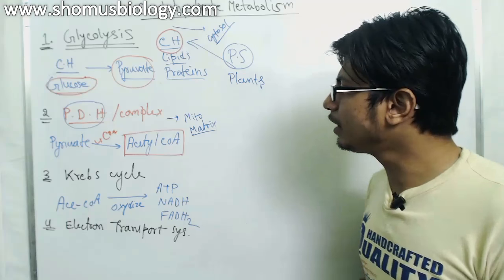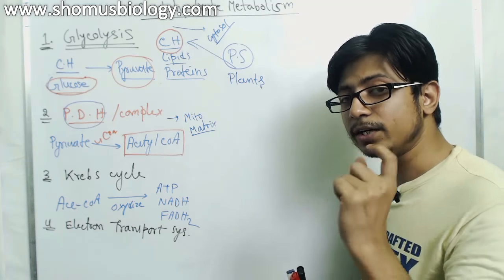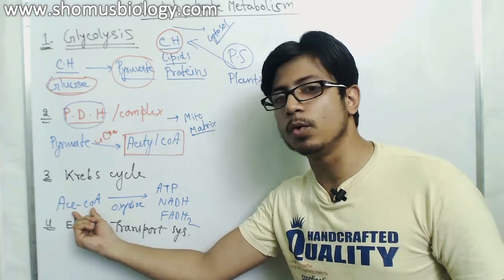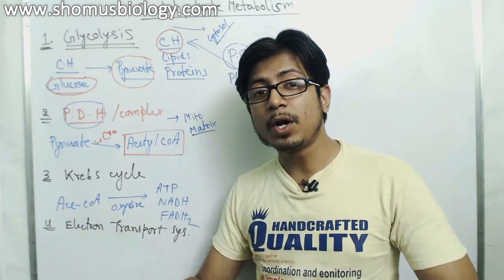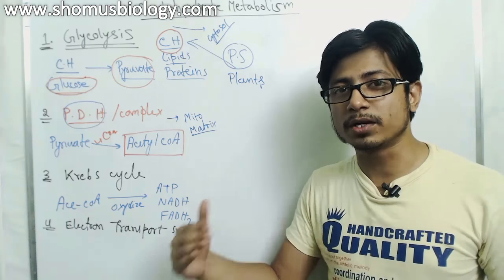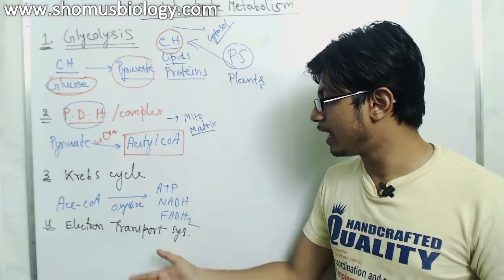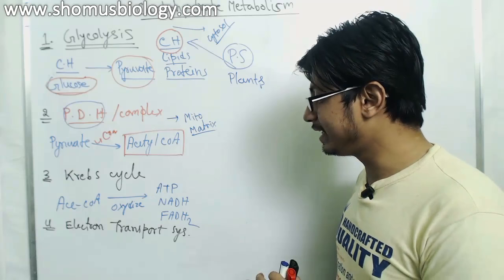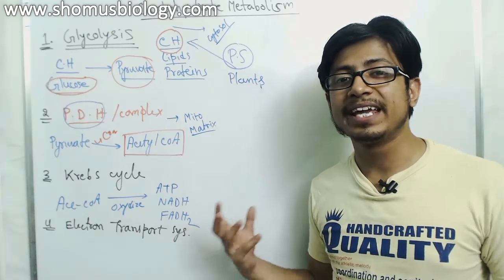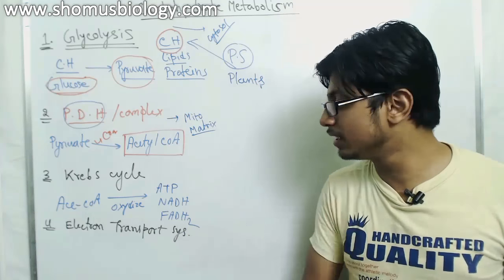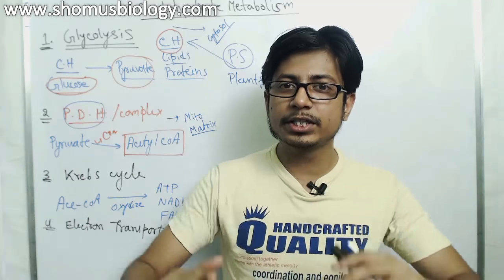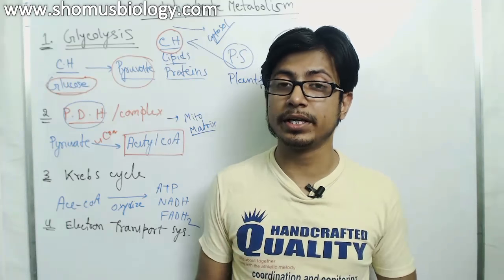The Krebs cycle operates in aerobic mode because this step requires oxidation of acetyl-CoA and its downstream products. As acetyl-CoA is oxidized through multiple steps, we ultimately produce NADH and FADH2, which are energy-carrying molecules.